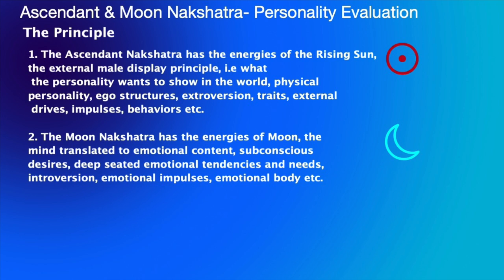Rule number one: the ascendant nakshatra has the energies of the rising sun, your rising sign also. This is the external male principle — what you display in the world, what the personality wants to show in the world. It covers the physical personality, ego structures, extroversion, traits displayed externally, external drives, impulses, and behaviors. The sun is all about shining forward; it brings forth anything meant to shine in the world.